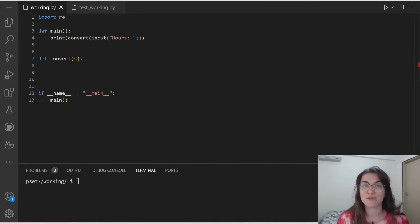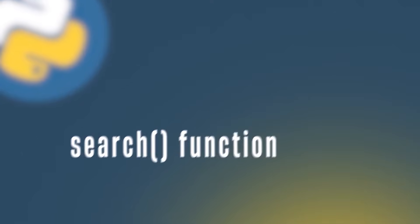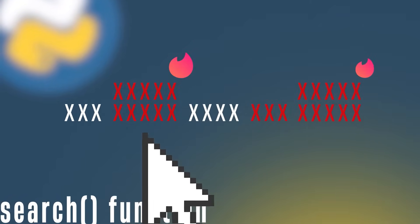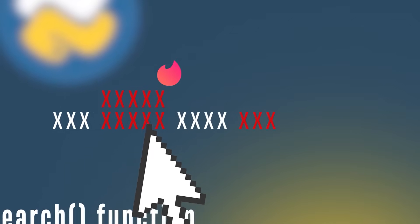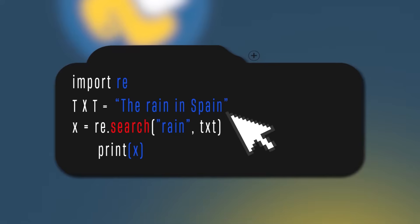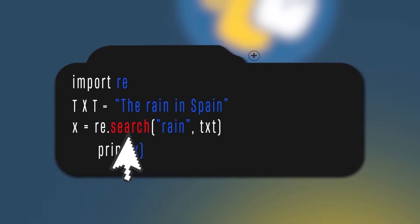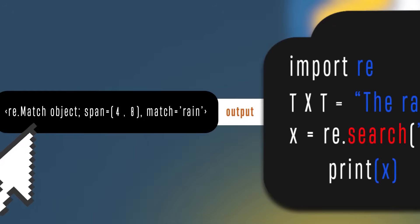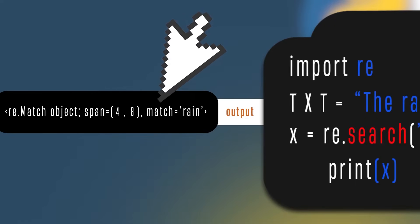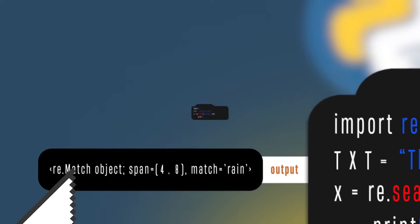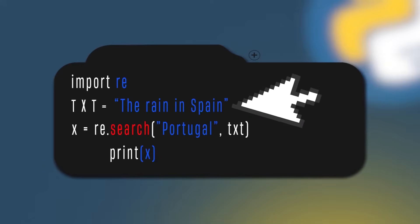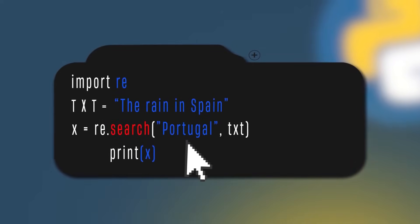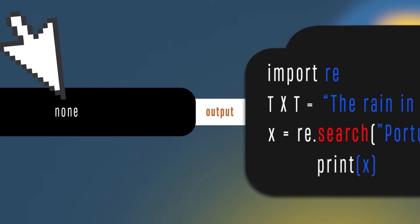The search function searches the string for a match and returns a match object if there is a match. If there is more than one match, only the first occurrence will be returned. For example, we have a variable called txt storing the value 'the rain in Spain'. We can use re.search to find if the word 'rain' exists in txt — the output will be a match object. If we search for 'Portugal', the output will be None because no match was found.